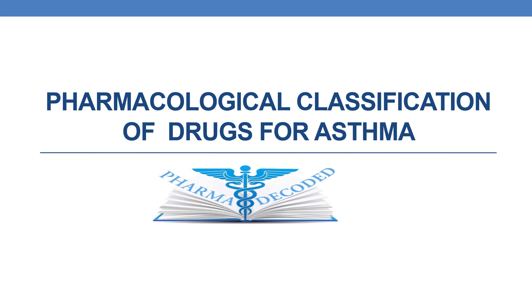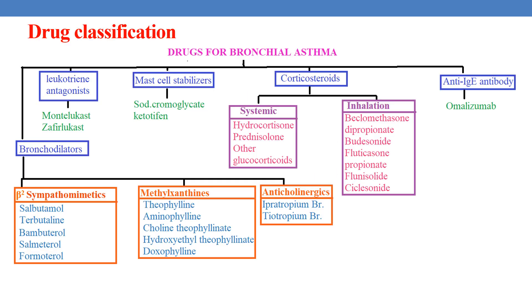Hello everyone. Now let us discuss the pharmacological classification of drugs for asthma. Coming to the drugs for bronchial asthma, the first class is bronchodilators. Under bronchodilators, there are beta-2 sympathomimetics, methylxanthines, and anticholinergics.